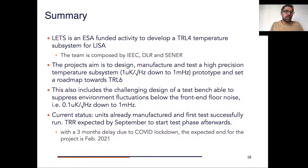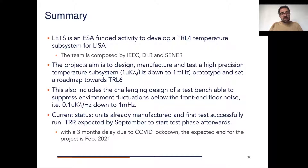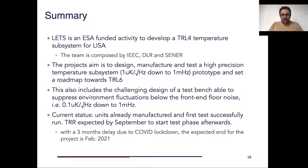To conclude, I will give you a brief summary. LETS is an ESA-funded activity to develop a TRL 4 temperature measurement subsystem for LISA. The team is composed by people at IEEC Barcelona, DLR Bremen, and Sener. The main goal is to design, manufacture, and test a high-precision temperature subsystem reaching one micro Kelvin, and to set a roadmap towards TRL 6. This also includes the very challenging activity of designing a test bench able to suppress environmental fluctuations below the front-end floor noise. The units are already manufactured, a first test has been run successfully, and we expect to hold the test readiness review in September and then start our testing phase to finish around January–February next year.